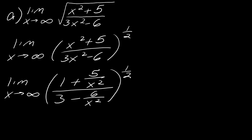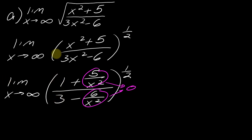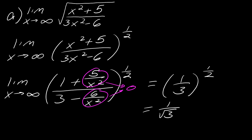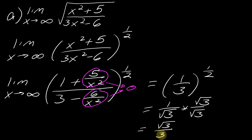After dividing everything by x squared, here's what I'm left with. The terms with x in the denominator both go to zero, and the rest leaves just one third. So this really equals one third to the one half. From here it's a matter of format: some teachers take 1 over the square root of 3, others want you to rationalize — multiply top and bottom by √3 to get √3/3. The homework system might require the rationalized form, so just be aware.